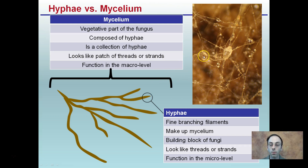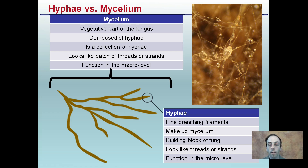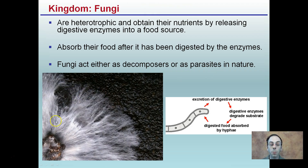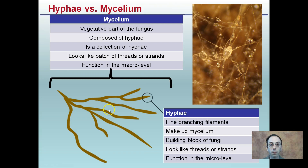Fungi have unique structures called hyphae and mycelium. Mycelium is the large vegetative part of the fungus, composed of hyphae — a collection of hyphae. It looks like a patch of threads or strands and functions at the macro level. Hyphae are the fine branching filaments that make up mycelium; they are the building blocks of fungi, functioning at the micro level and serving as the exact site of nutrient absorption.